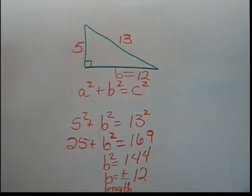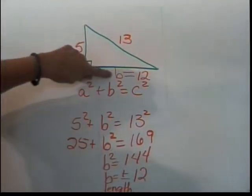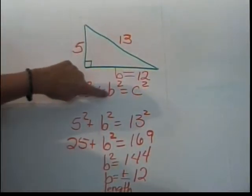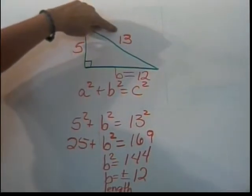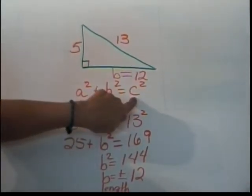Now when we do these you got to remember to check whether or not you are looking for a leg of the triangle, in which case it's going to be either a or b, or if you're looking for the hypotenuse of the triangle, in which case you're going to need to know a and b, and you'll be trying to solve for c.